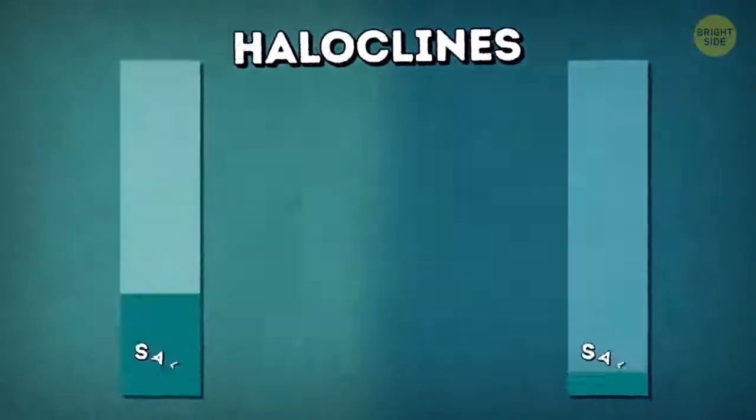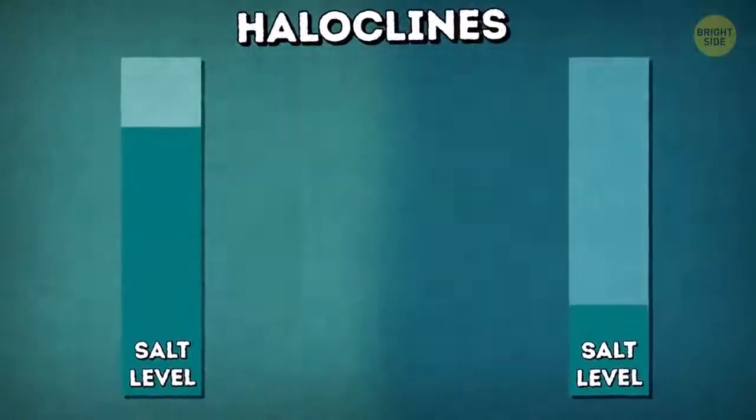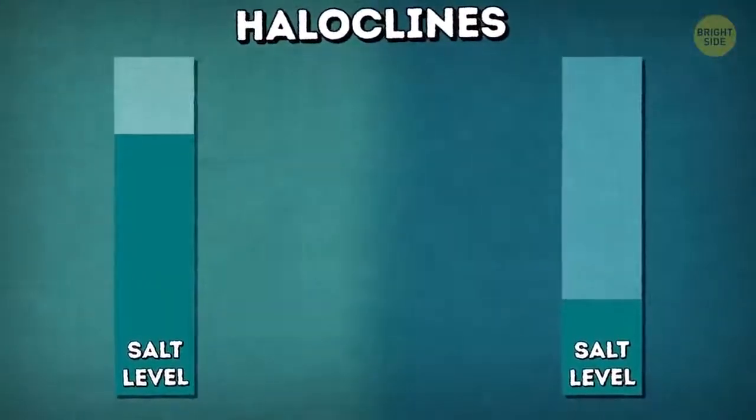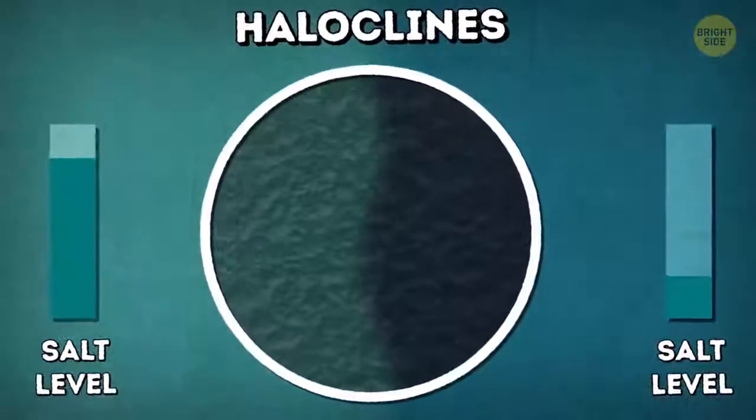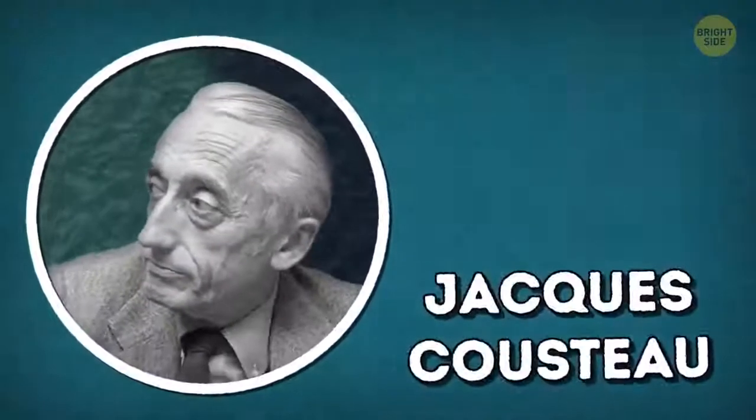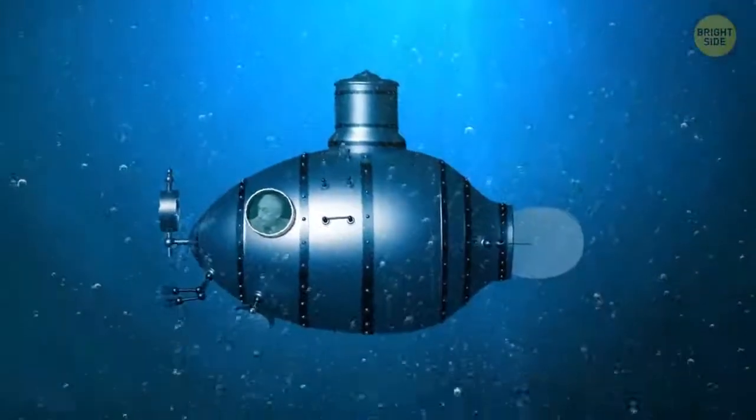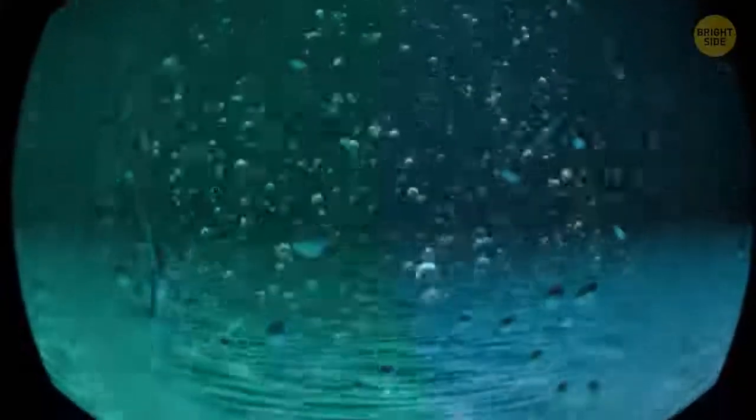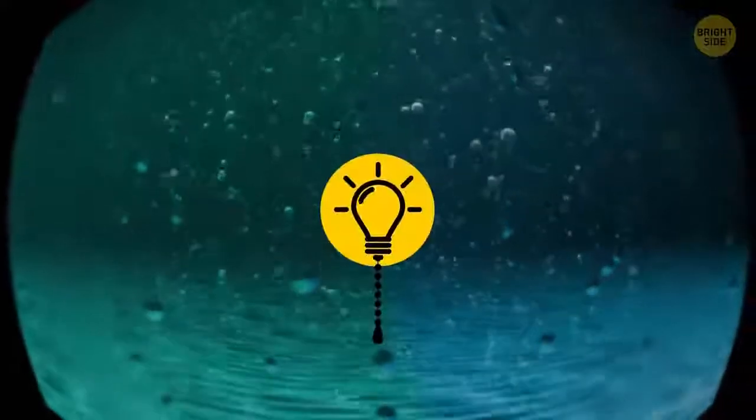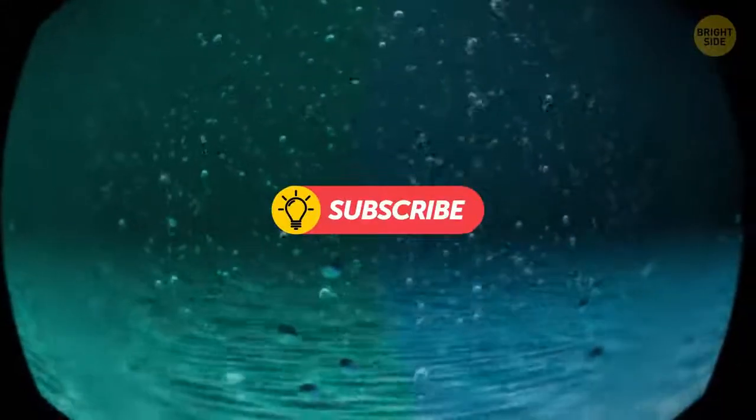Haloclines, borders between waters with different salinity, are the most spectacular, and this is what we see when the Atlantic and Pacific oceans meet. The famous explorer Jacques Cousteau found this when he was deep diving in the Straits of Gibraltar. The layers of water with different salinity looked like they were divided with a transparent film, and each layer had its own flora and fauna.